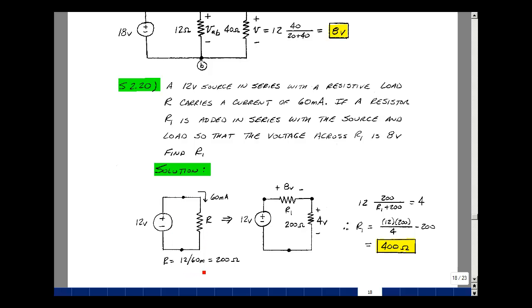Since the voltage is 12 volts and the current is 60 milliamps, the resistance R is 200 ohms.